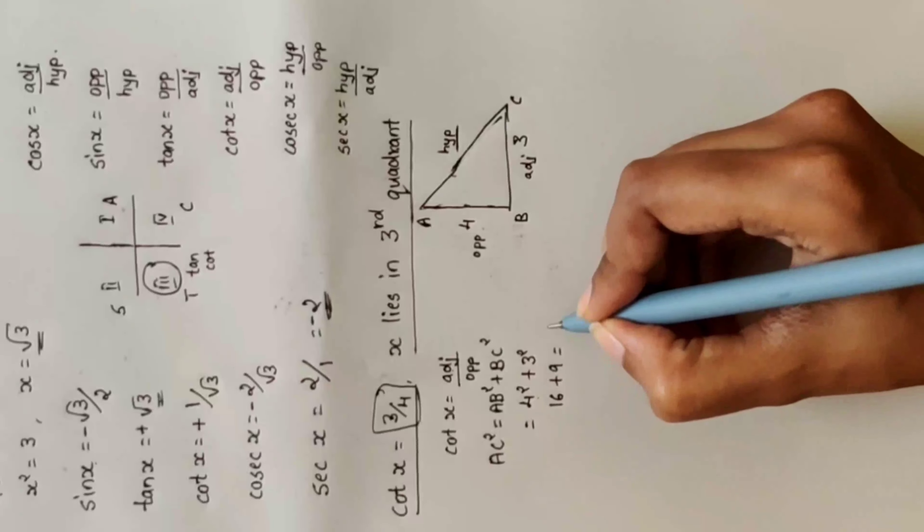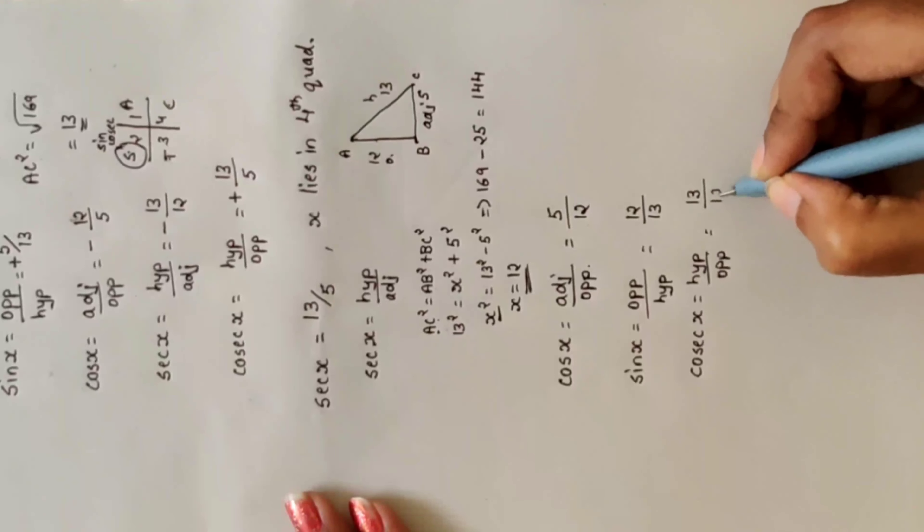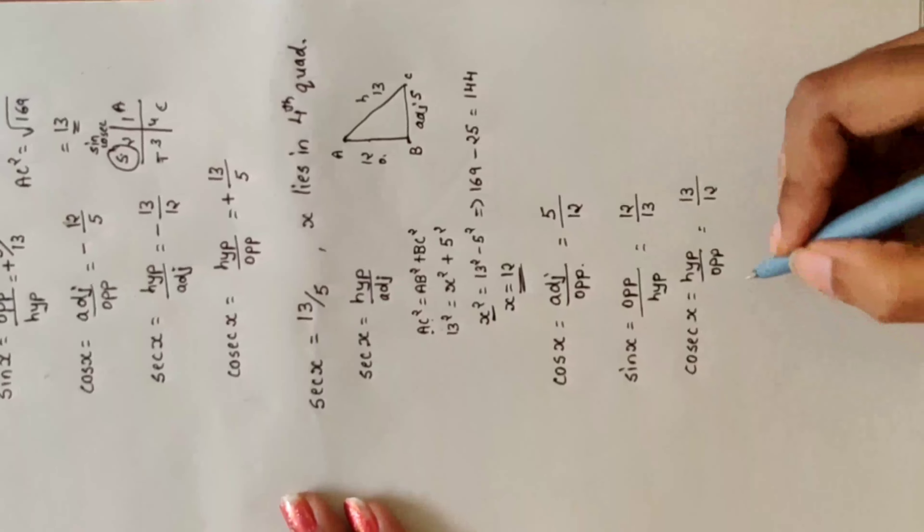Cosec x = hypotenuse divided by opposite = 13 divided by 12.